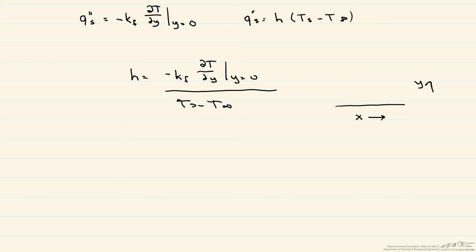If you take a look at the expression for h, note that this denominator Ts minus T infinity stays constant, since it's an isothermal plate at Ts, and our bulk temperature is T infinity.